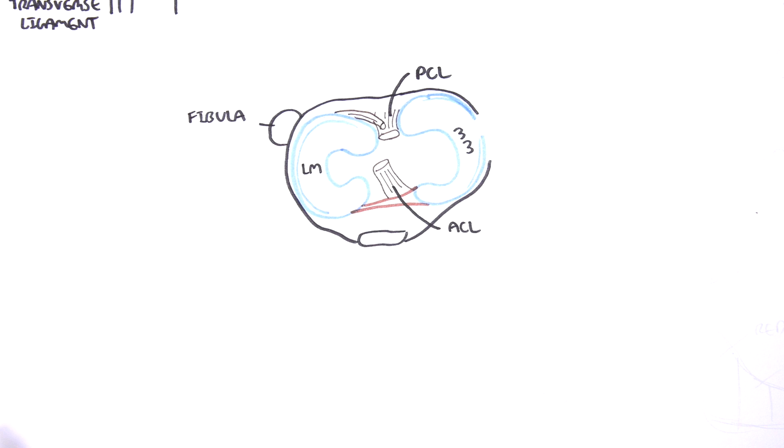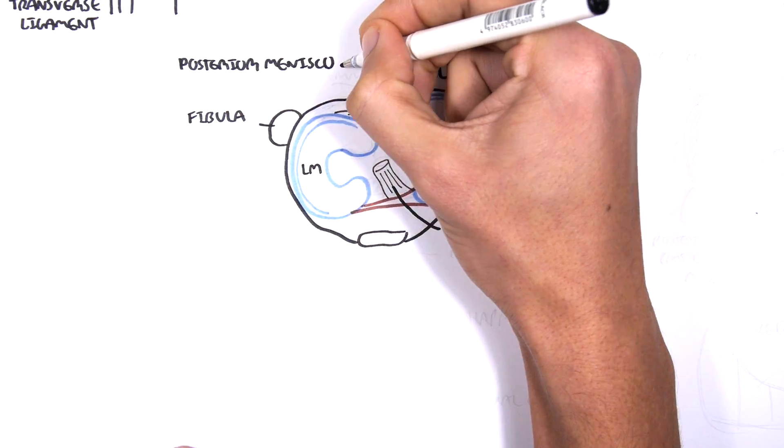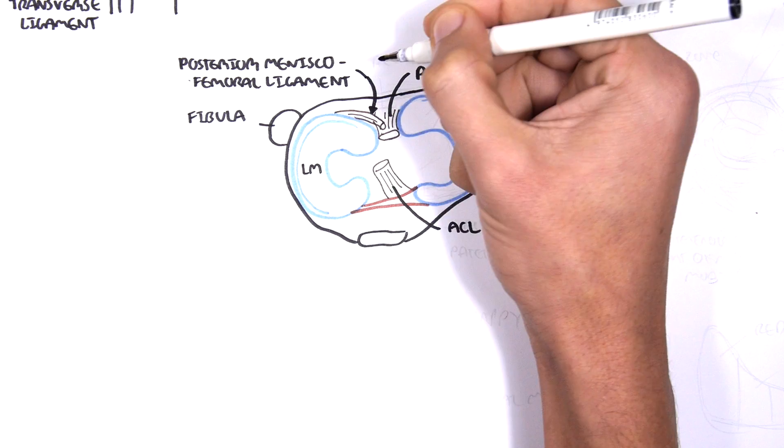Now in some people, there is presence of another ligament at the back coming off the posterior aspect of the lateral meniscus known as the posterior meniscus femoral ligament. And you either have an anterior or posterior. But these ligaments essentially help the posterior cruciate ligament.